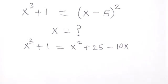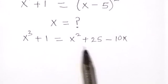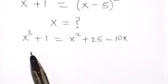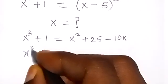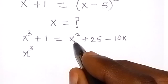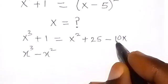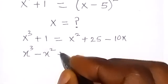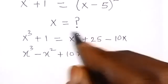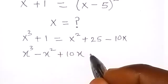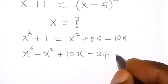From there we can try to bring everything to one side. Taking everything on the right to the left to form an equation, we have x cube, then minus x squared, then plus 10x, and plus 25 becomes minus 25, so plus 1 minus 25 is minus 24, then equals zero.